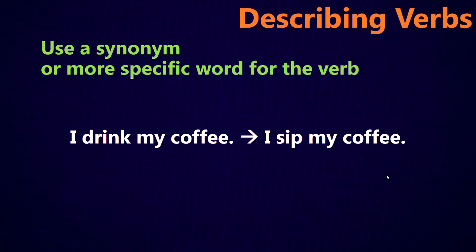If you're describing verbs, one thing you can do is use a synonym or a more specific word for the verb. For example, if I say I drink my coffee, drink is a very basic verb. If I want to be more descriptive, I can say I sip my coffee, because sip is a synonym for drink but more specific — you can drink big gulps or take sips, meaning you're just drinking a little bit at a time. So I sip my coffee is more descriptive about the way I'm drinking it.